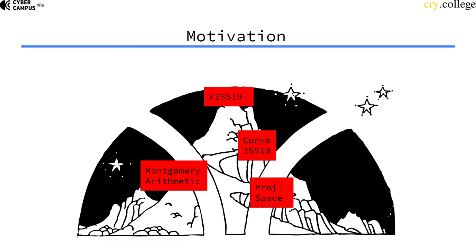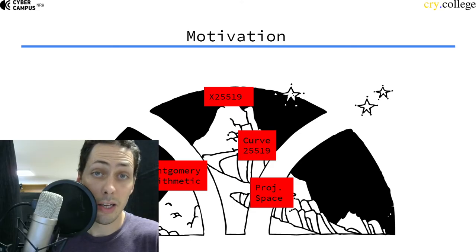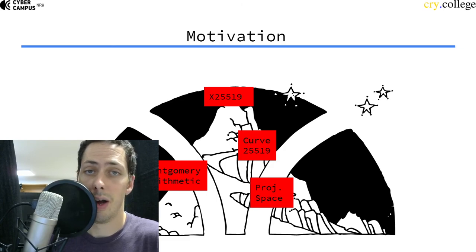we're gonna see how we can do a Diffie-Hellman key exchange with this specific curve and why it's so much faster and so much nicer to implement.